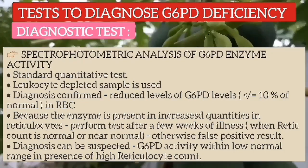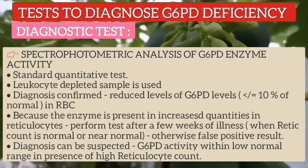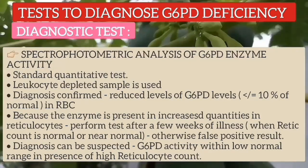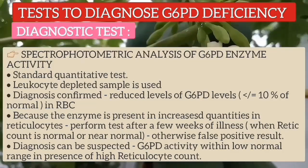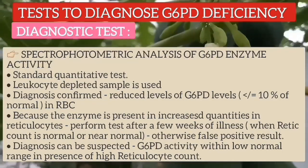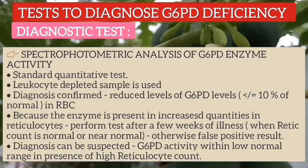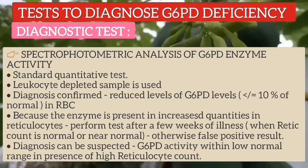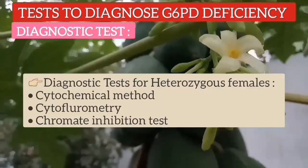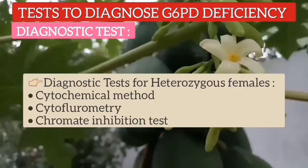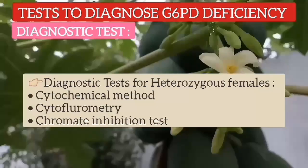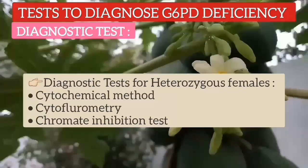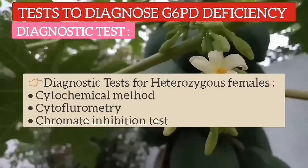The standard quantitative test uses a leukocyte-depleted blood sample. Diagnosis is confirmed by finding reduced levels of G6PD in erythrocytes, below 10% of normal. Because this enzyme is present in increased quantities in reticulocytes, the test should be performed when the reticulocyte count is normal, about a few weeks after illness. Diagnosis can be suspected when G6PD activity is within the low normal range in the presence of a high reticulocyte count. Spectrophotometric analysis may fail to detect G6PD deficiency in heterozygous females; cytochemical methods, cytofluorometry, and chromate inhibition tests are more sensitive in such cases.